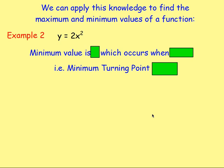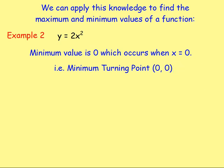Example two: y equals 2x squared. The minimum value — because you're squaring something, the smallest value you can get is zero. If you times that by two, that's still zero, and that will occur when the thing you are squaring is zero. Here we're squaring x, so x must equal zero. Giving you a minimum turning point of (0, 0).